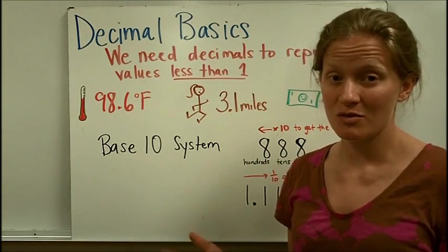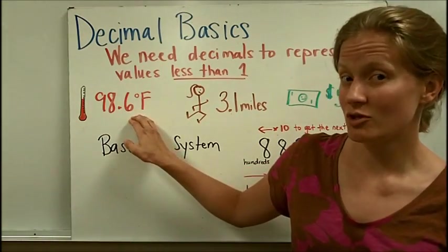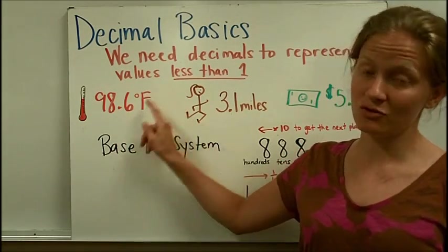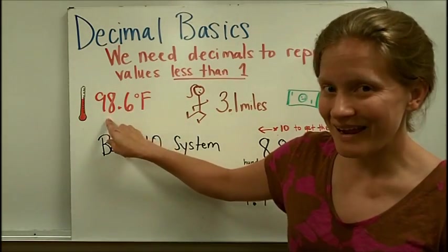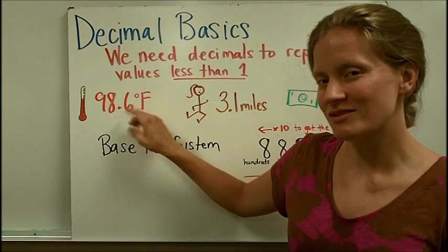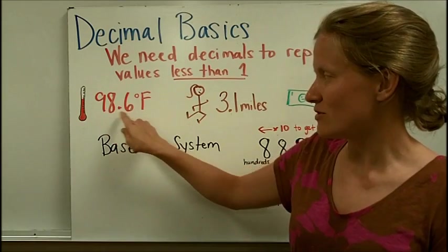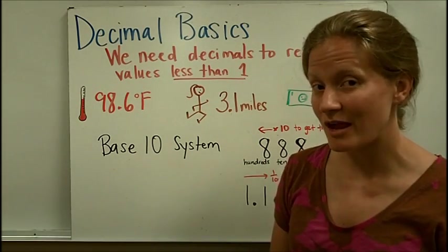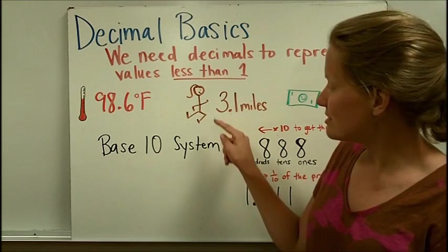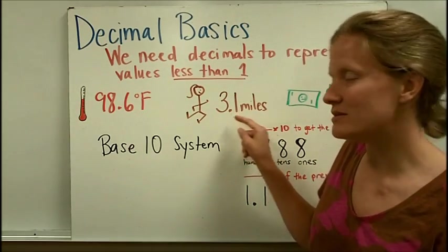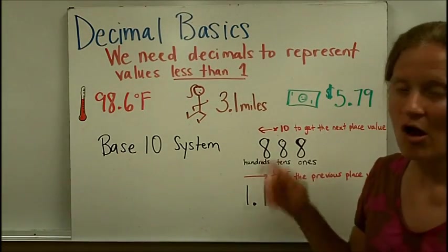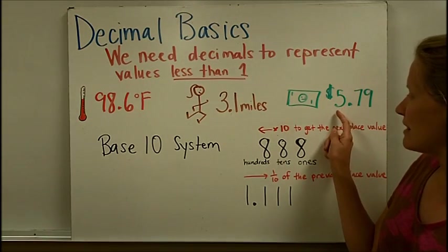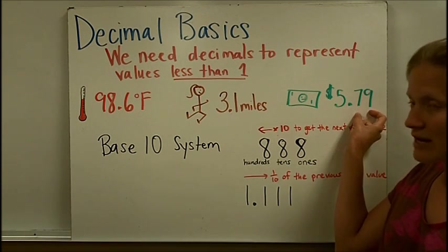Some examples of decimals that you see in your everyday life might be if someone takes your temperature. Your normal body temperature is, we say, 98.6, or we're going to learn to read it as 98 and 6 tenths of degrees Fahrenheit. This means that you're between 98 and 99 degrees. You're 6 tenths above 98 degrees, so you need part of a degree here. If you've ever heard of someone, or maybe you yourself have run a 5K race, that's equal to 3 and 1 tenths miles. This means 3 miles and just a little bit more, 1 tenth, one piece of a mile. And maybe, all the time, we're buying something with money, and the 79 cents here is showing part of a dollar. This is saying that it's between $5 and $6, 79 hundredths of a dollar.